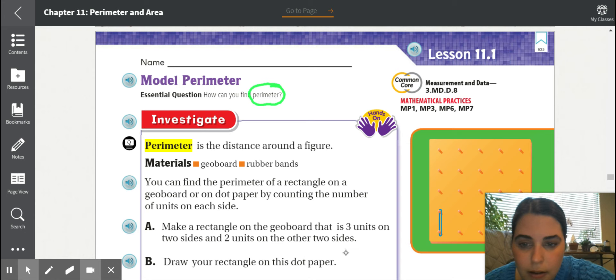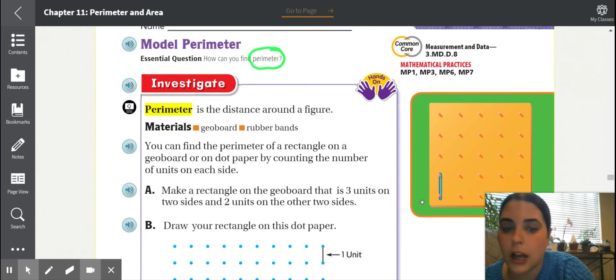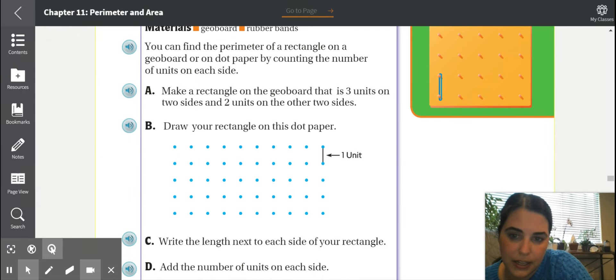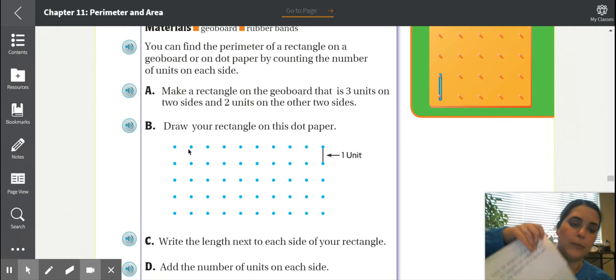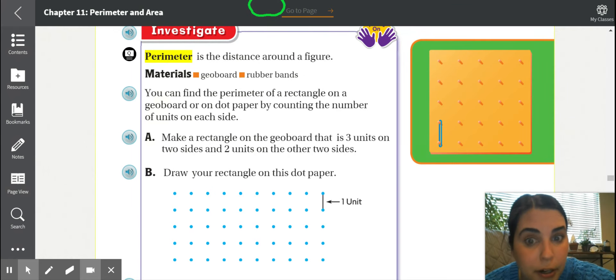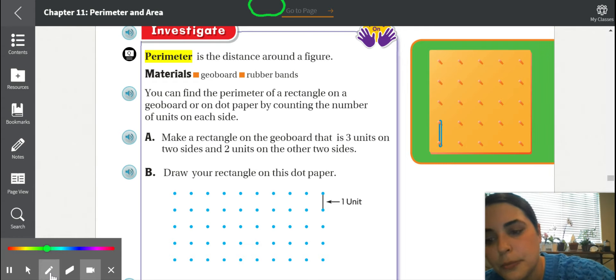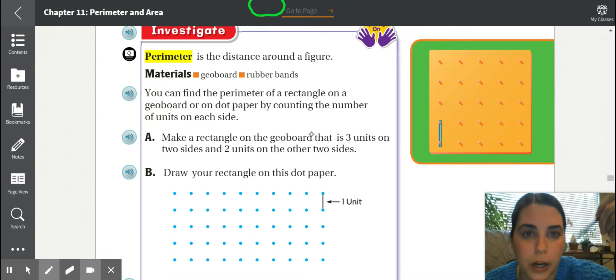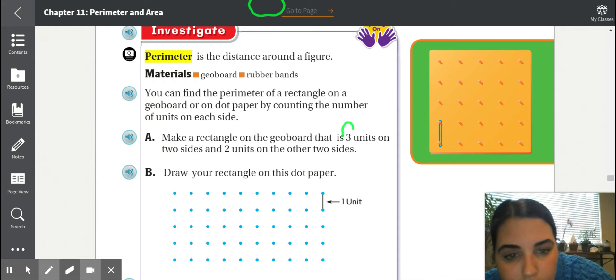Perimeter is the distance around a figure. Instead of using, the book says to use a geoboard, and we're not going to use that today. What we're going to use is this dot paper. Another word for this is called grid paper. Everyone should have something like this stapled. It's some grid paper, and we will be using this in this chapter. Make sure you have this ready to go for chapter 11 lessons.